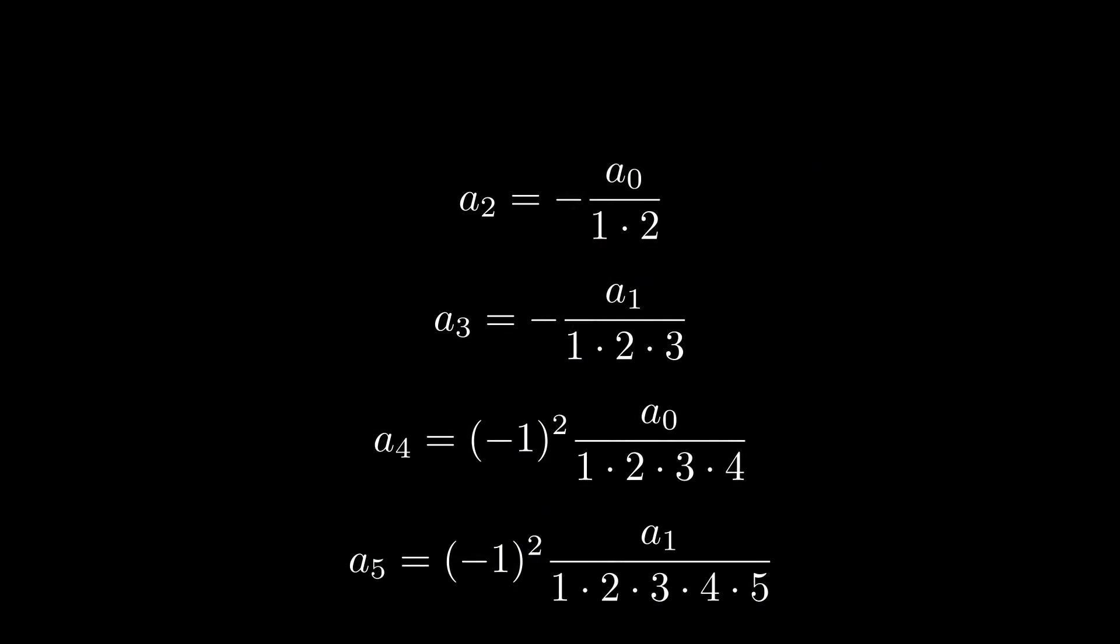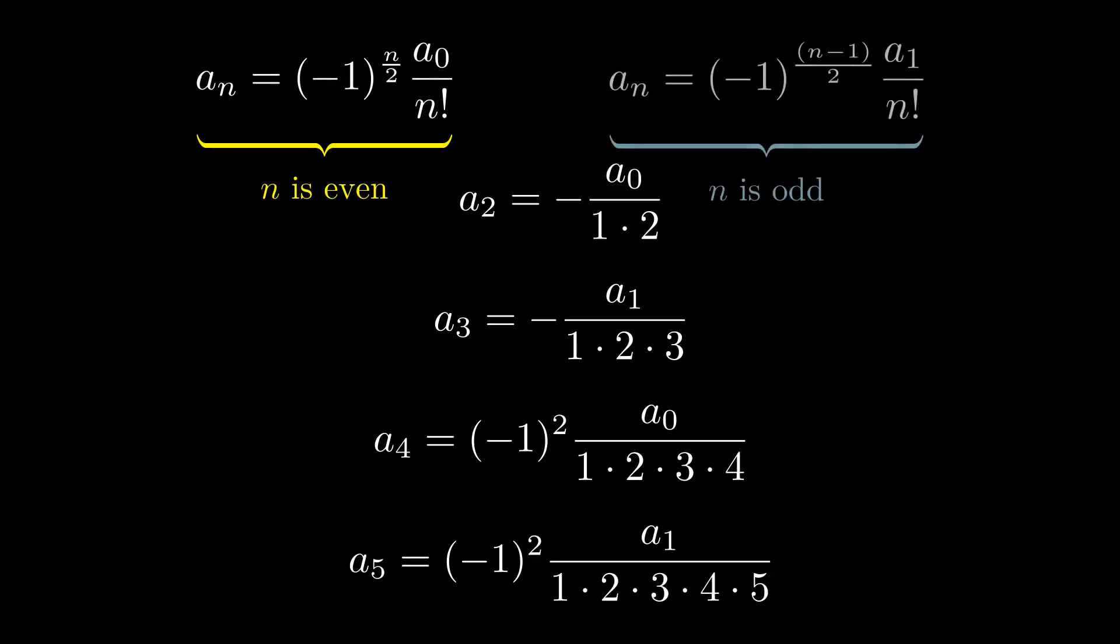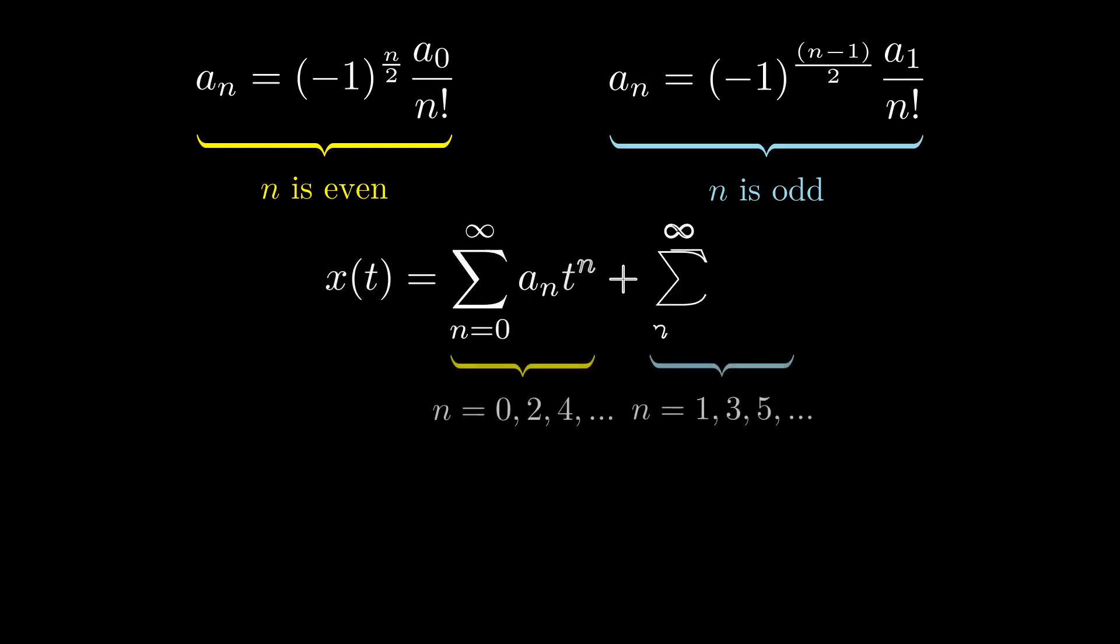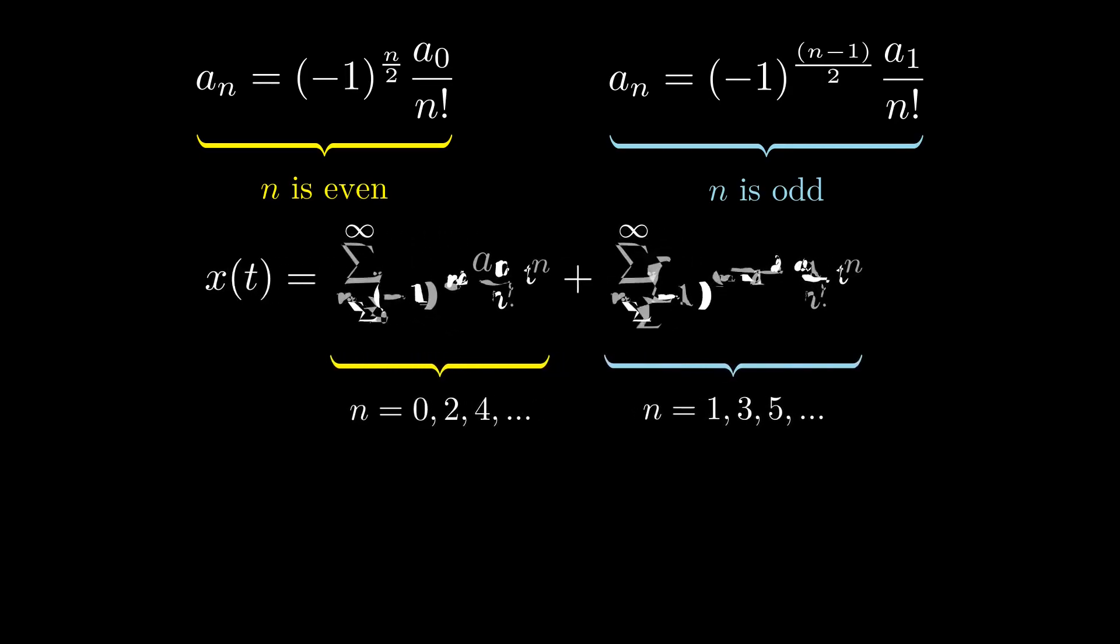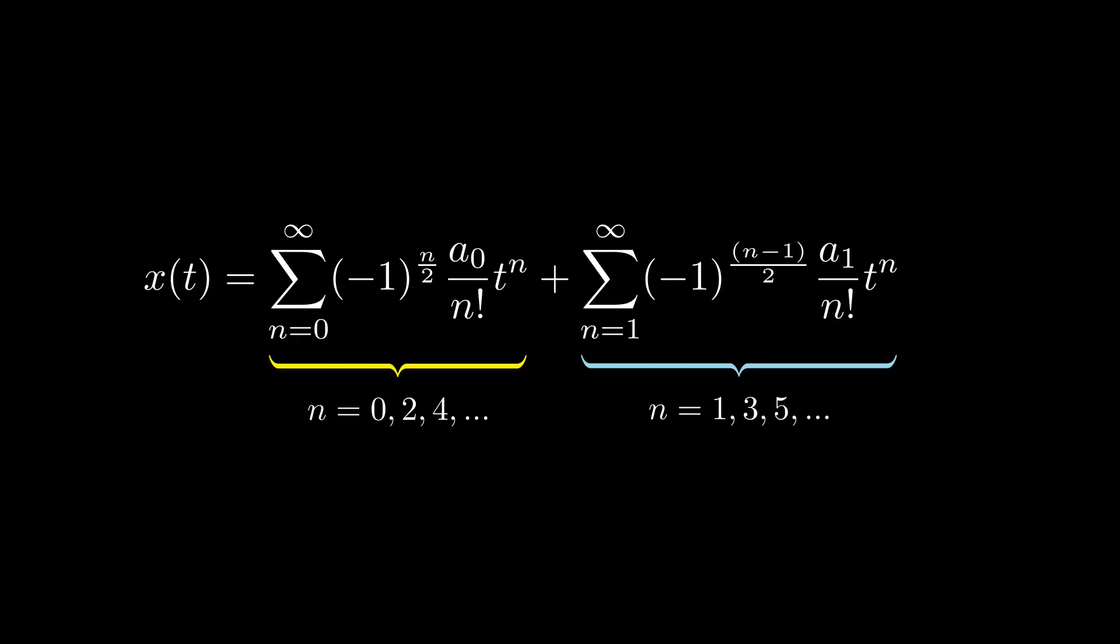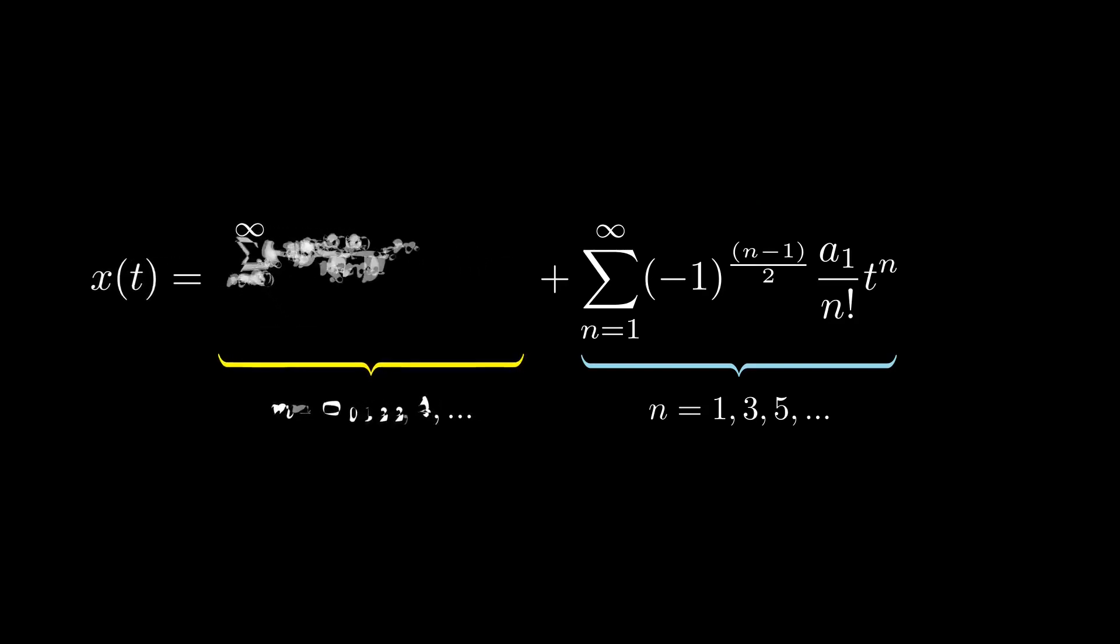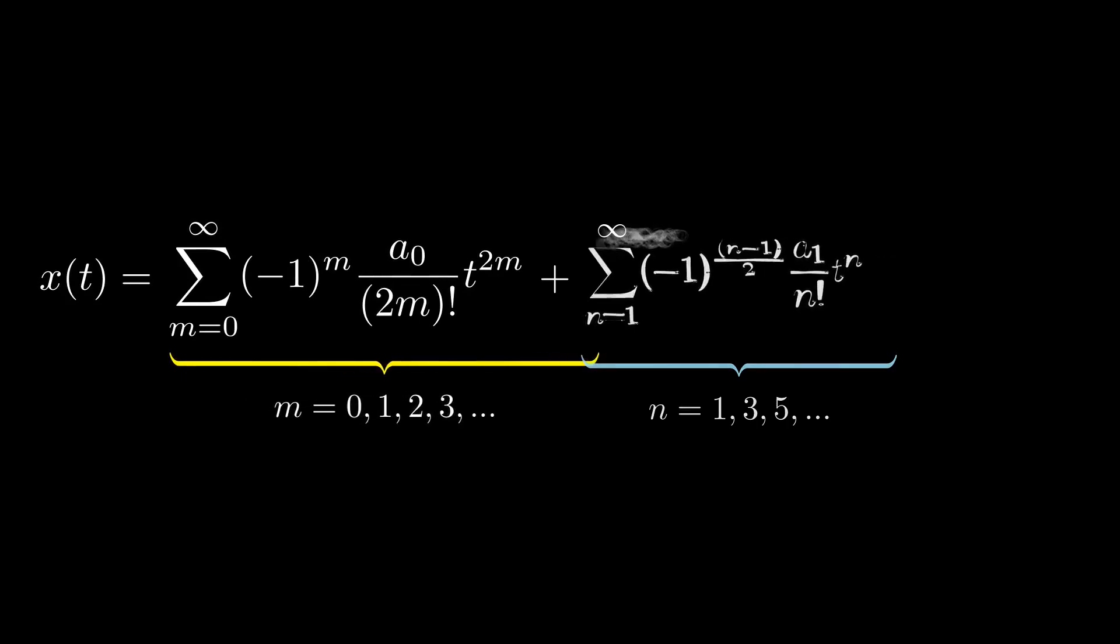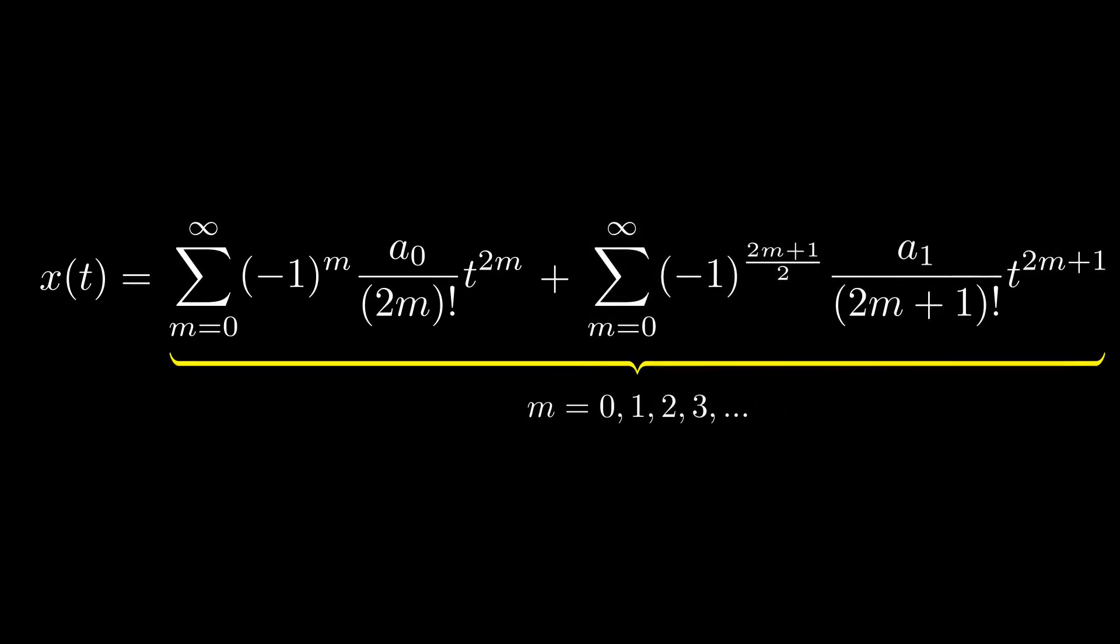From this exercise, we can see that all the even numbered coefficients are related to a0 and the odd numbered are related to a1 as written here. Let's rewrite the power series as the sum of even and odd numbered terms. Then substitute the values of the coefficients as we derived earlier. Now, we can replace the even numbered n by 2 times m and odd numbered n by 2m plus 1.